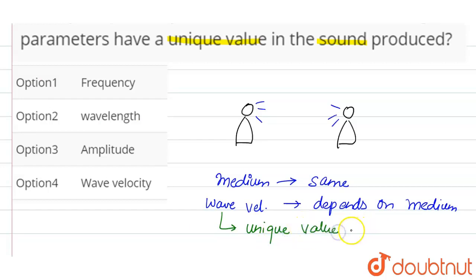for both of you. So from the options, we can see option number four is correct, that is wave velocity.